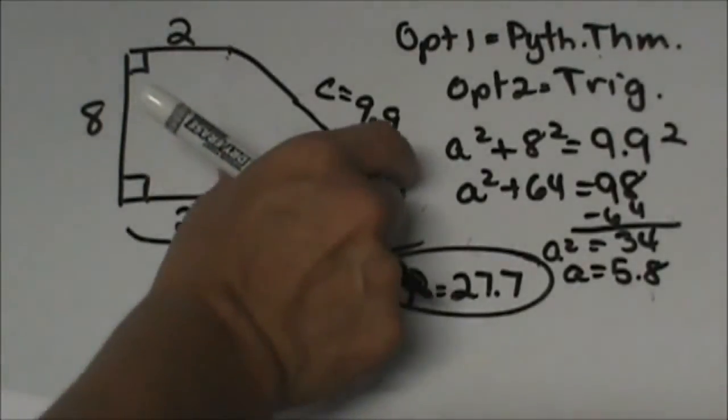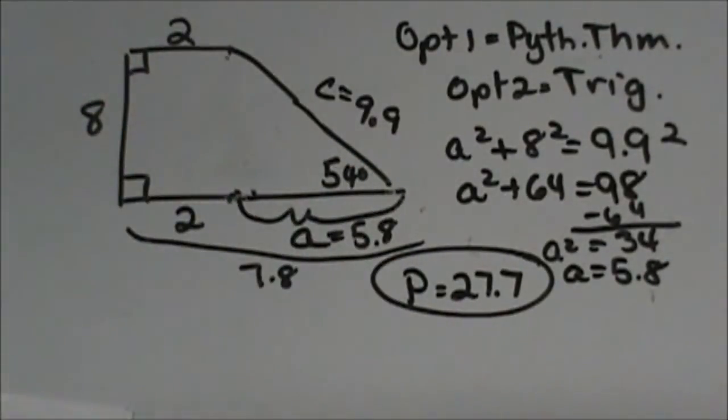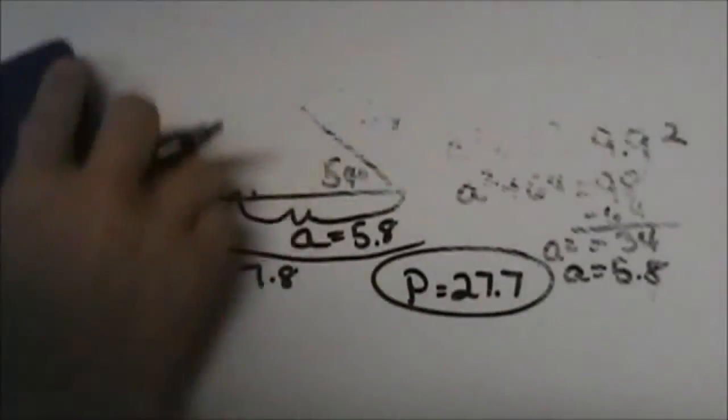Again, you can use trig to find this missing side and then solve it. You should get the same answer. Okay, so let's jump on to number 6.